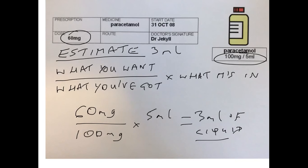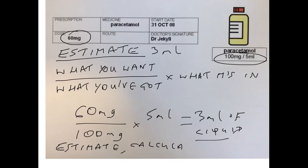So does that answer make sense? Well, it ties up with our estimation. We did the estimate, we did the calculation, and then we checked our answer. The final answer of 3ml of liquid is the same as our estimation, so that does make sense. So 3ml of liquid is the final answer.